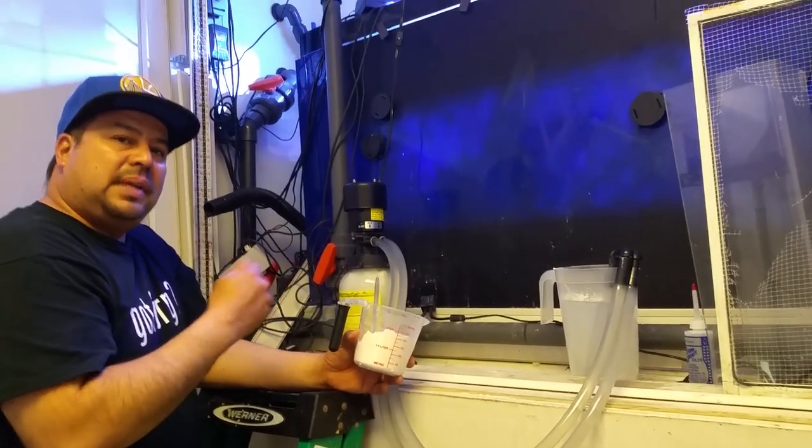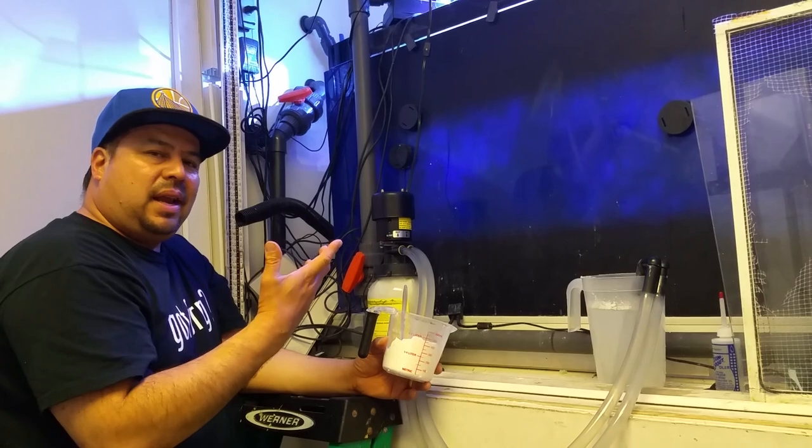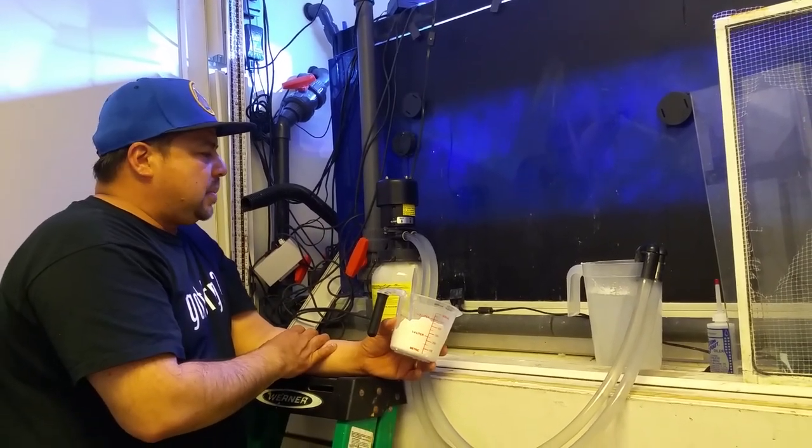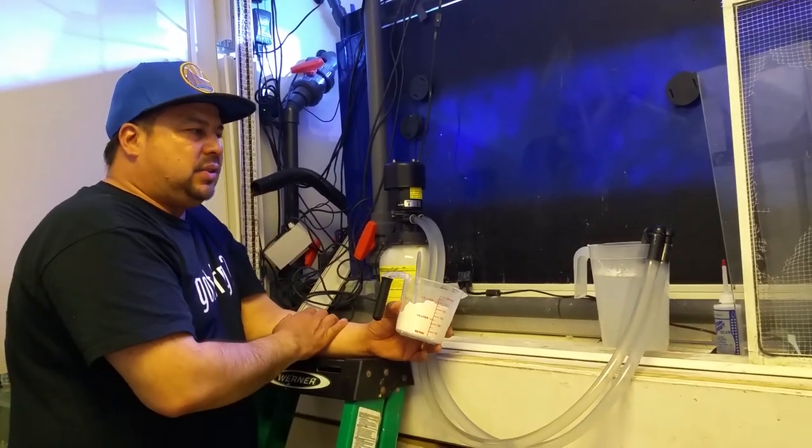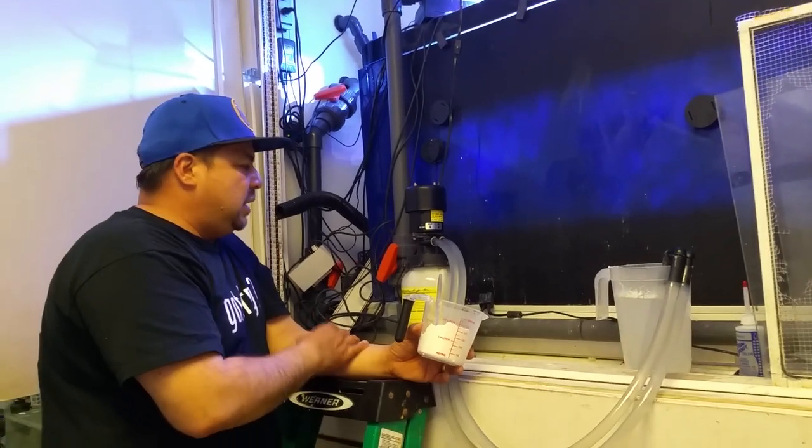And then just scrub it down a little bit with more water, let it air dry. And rinse it again just to make sure you get all the bleach out and just alternate it that way.